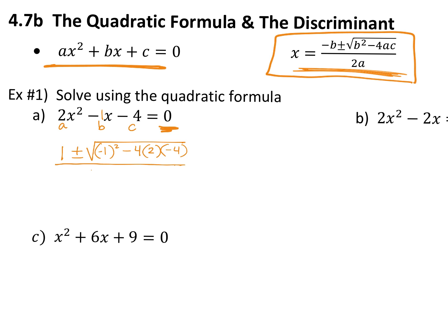We put that over two times A, which is two — so two times two. Now you cannot just plug that into your calculator because your calculator doesn't do plus or minus for you. You need to do two different problems. I highly recommend that you take this information and plug it into your calculator exactly how you see it. The piece under the radical — that's the discriminant. Take that and plug it into your calculator right now and tell me what you get.